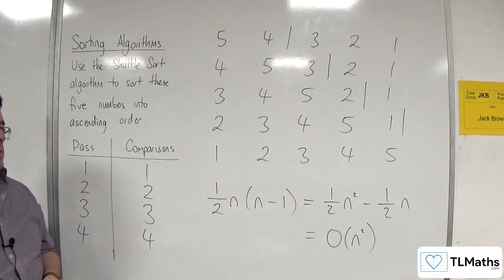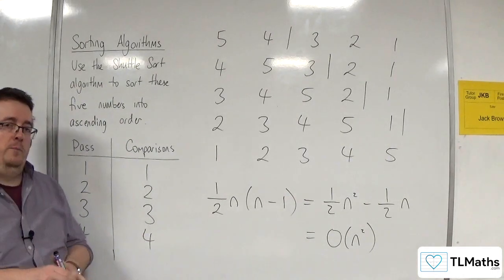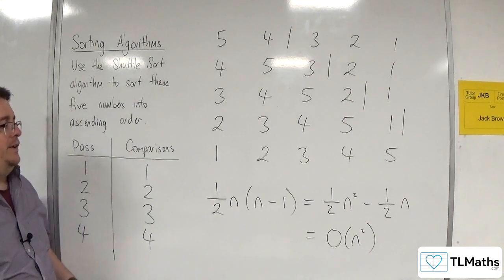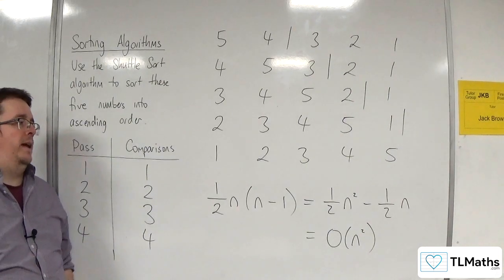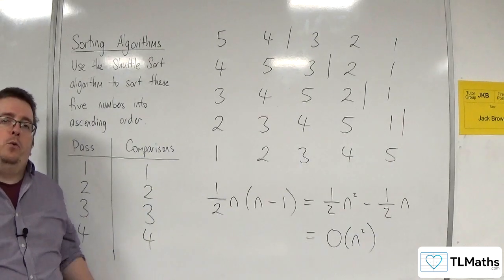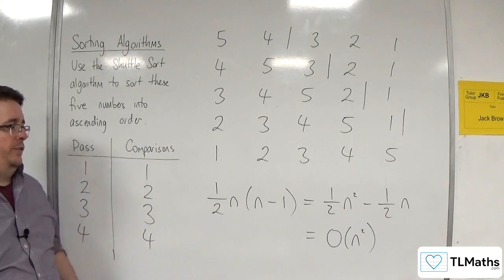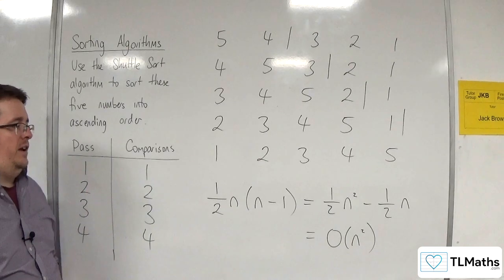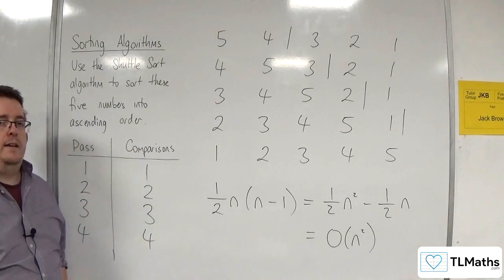In exactly the same way as you have for the bubble sort. So, all three algorithms that we have considered, the worst case scenario has been quadratic complexity.